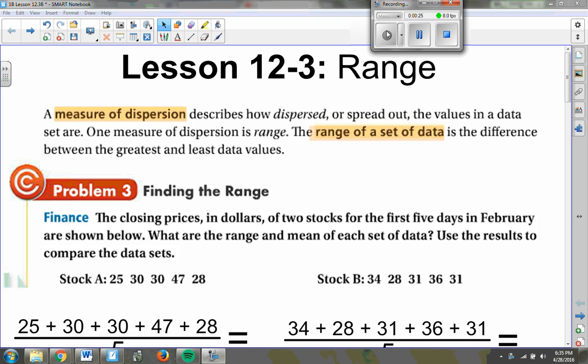How spread out our data is can be given by what is called the range of a data set. The range of a set of data is the difference between the highest data point and the lowest. So all we have to do really is subtract when we get there. So range is actually something that's very easy to find.